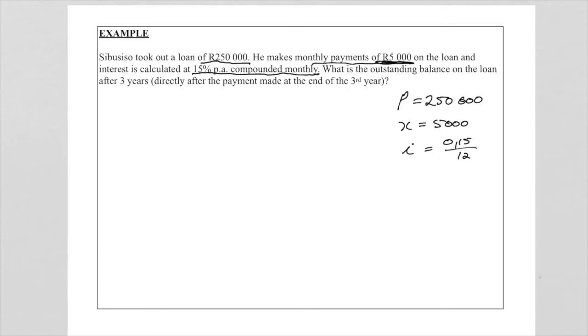Now they want us to calculate the outstanding balance on the loan after three years. So just to make it clear, what do we mean by three years? It is that after that payment made at the end of the third year, directly after that payment. So let us now look at the timeline.